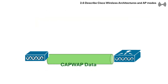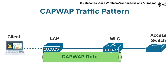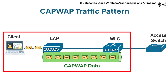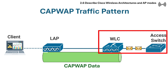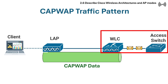Let's see the traffic pattern through the CAPWAP tunnel. The lightweight access point sends the client's traffic to the WLC by default. The controller is then responsible for bridging the client's traffic into the wired network.